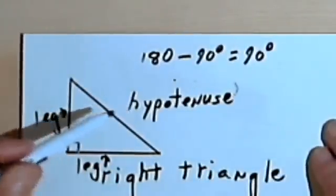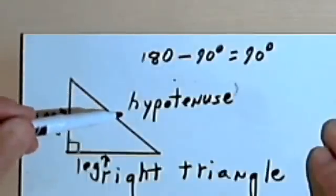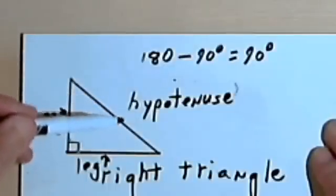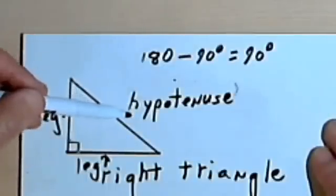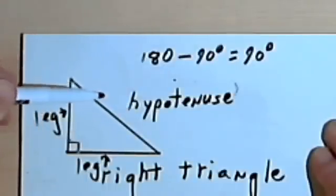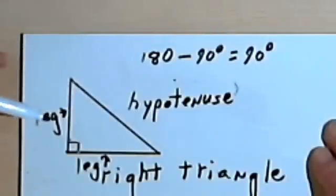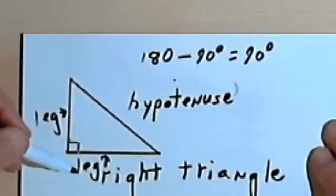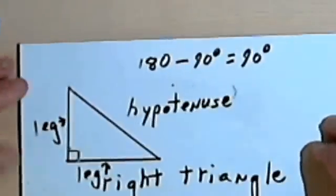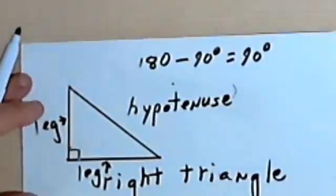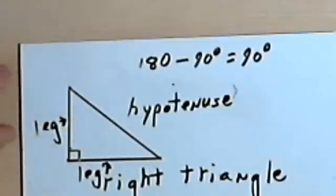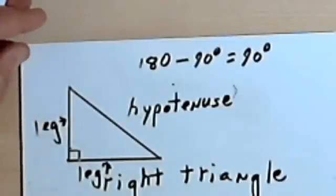And that's all there is to it. There's really no math involved in this video, but a lot of terminology, and you're going to need this terminology as you go on to deal with triangles in general, and right triangles more specifically. Okay, so that's it for now. Take care. I'll see you next time.